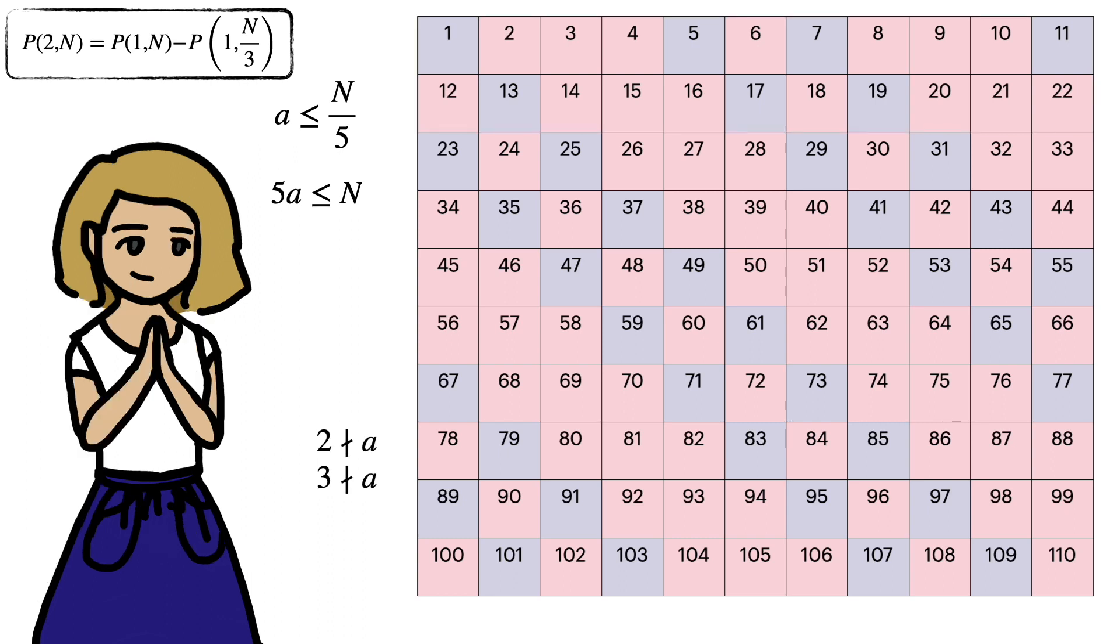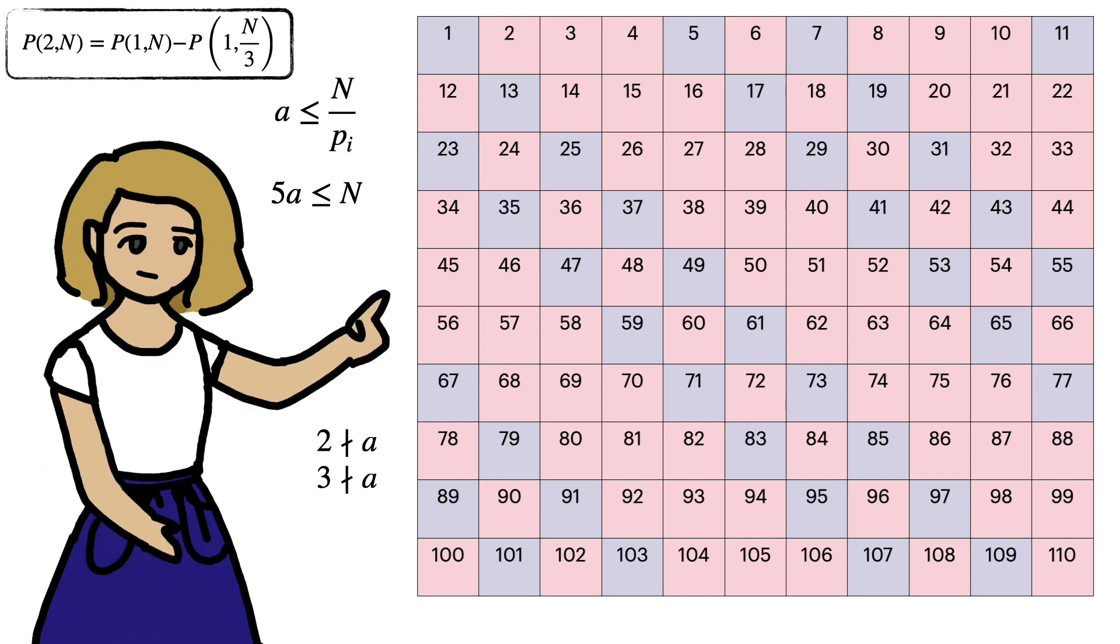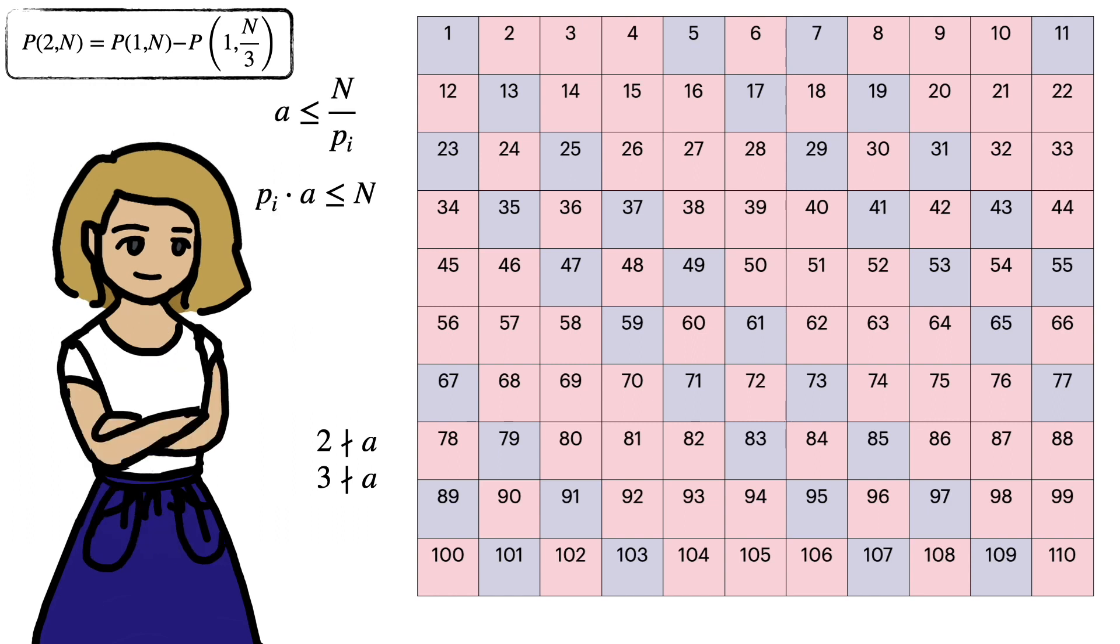This is a general kind of thing, right? Letting p_i be our ith prime. On the ith iteration, we look for a below n/p_i, such that p_i times a is below n.